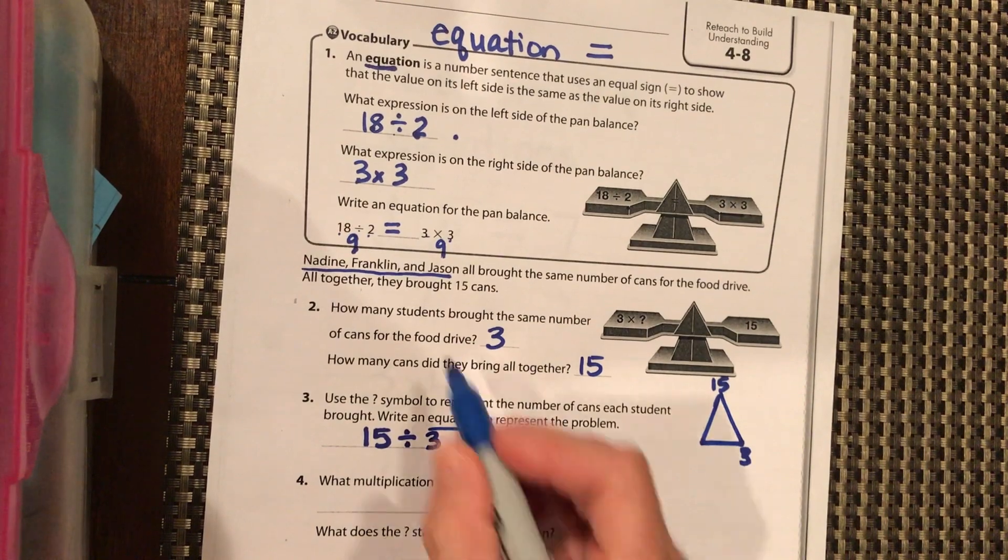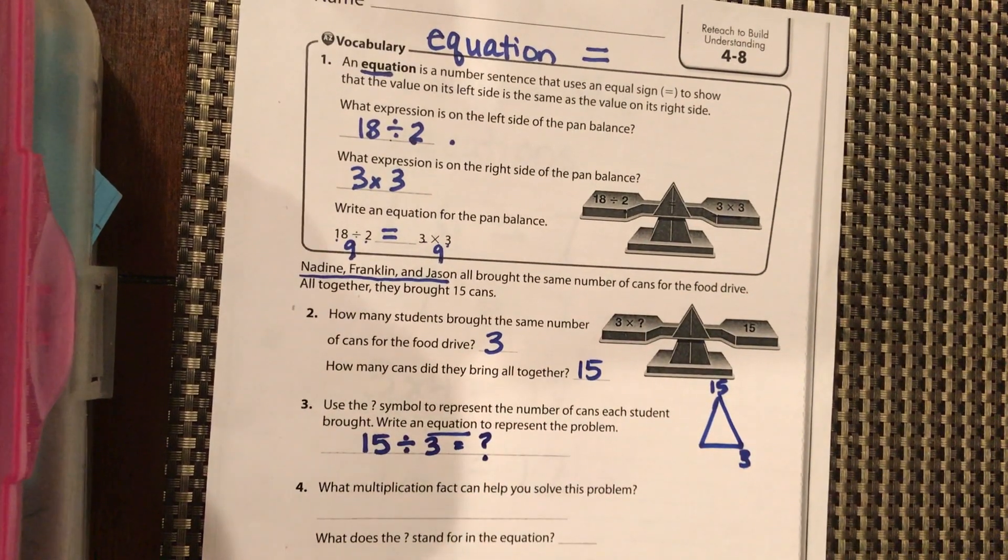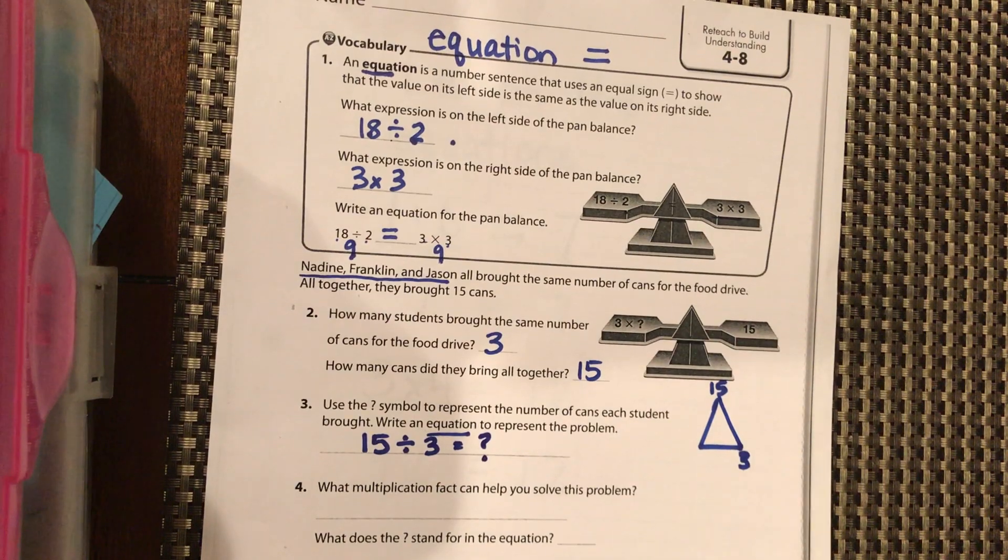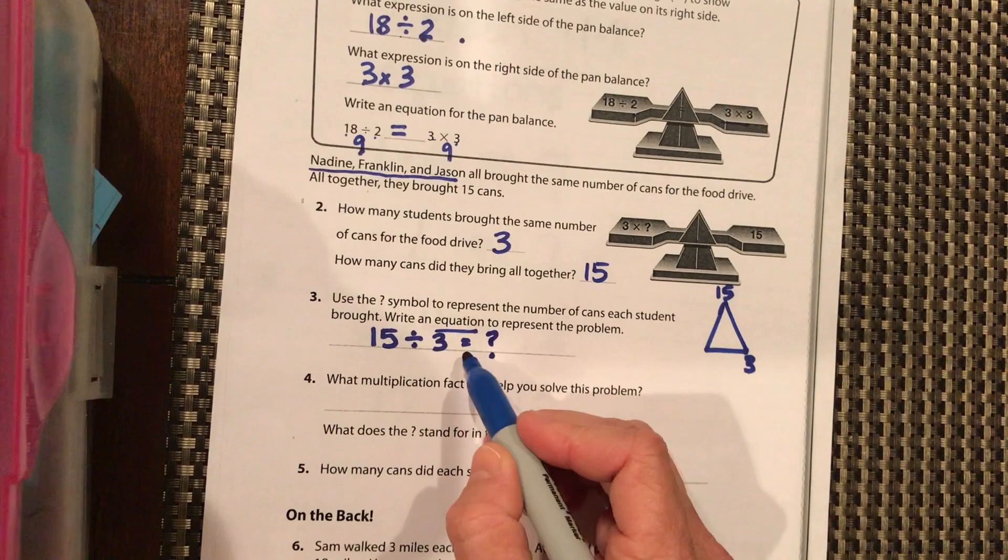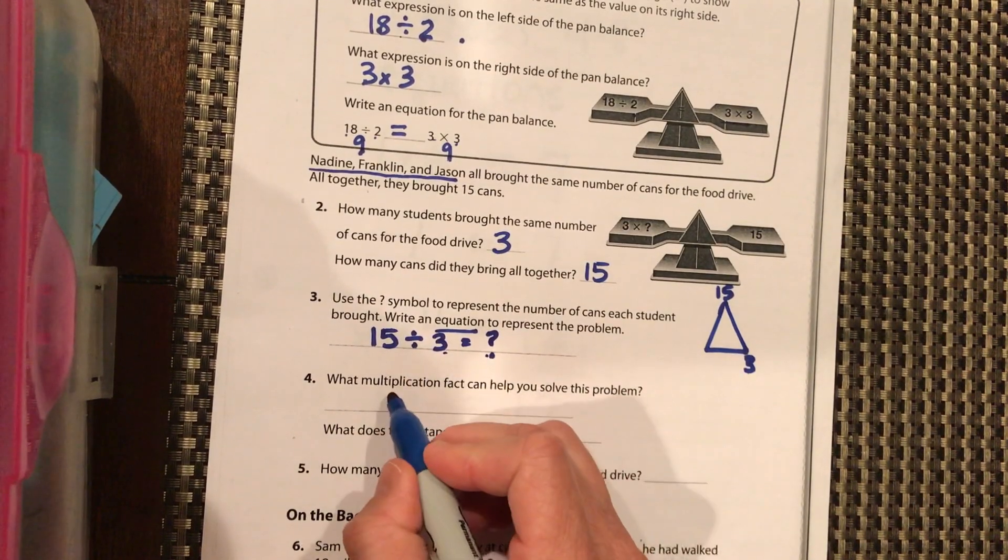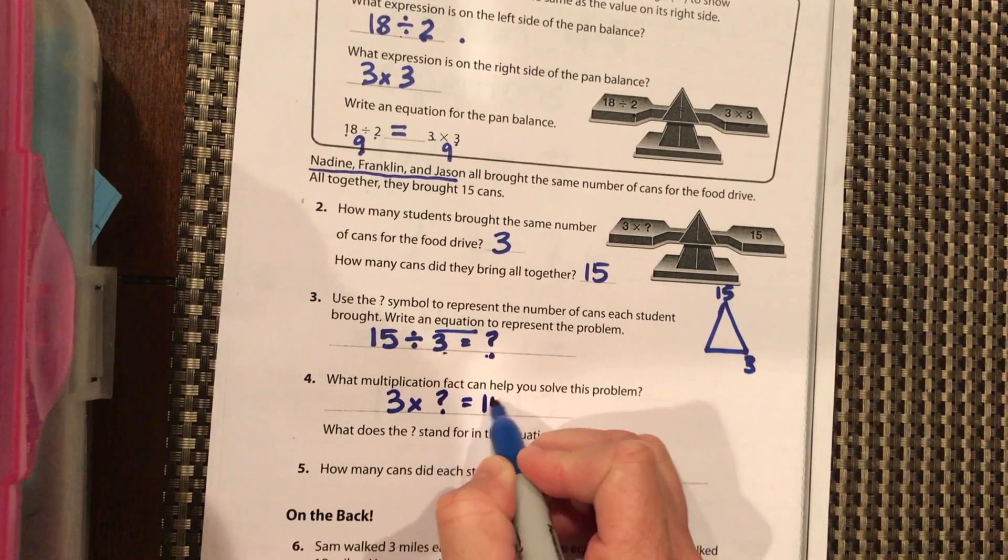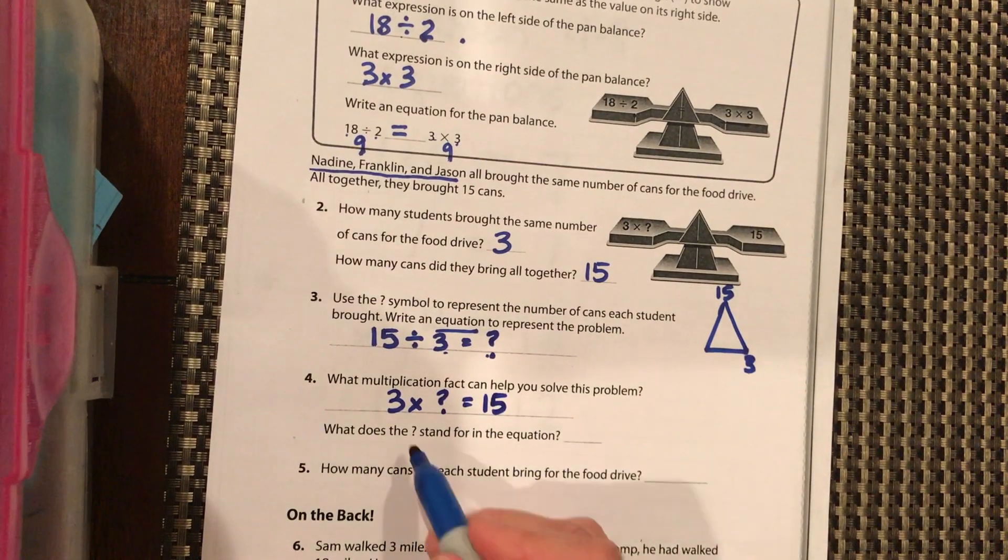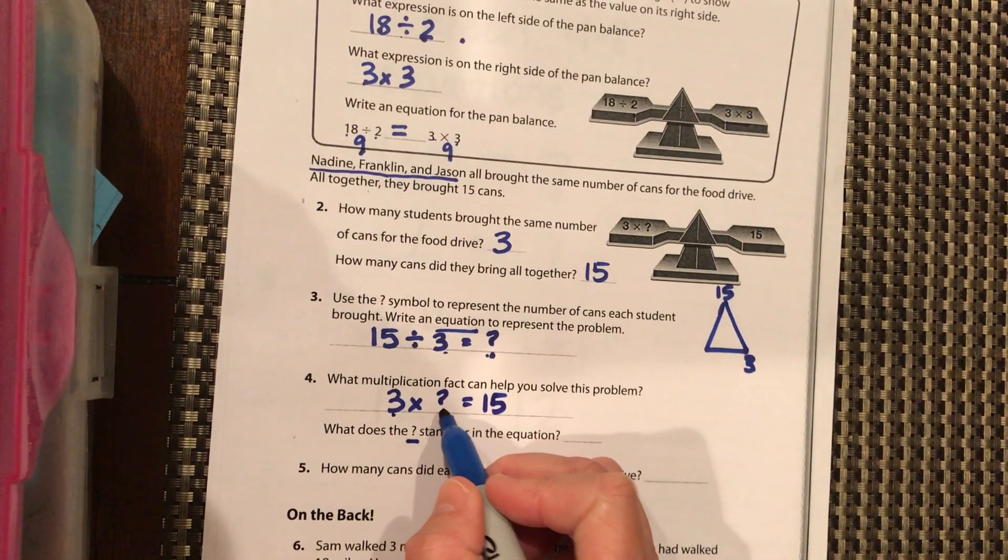Divided by the three students is going to tell us how many cans each student brought. So what multiplication problem can we have? It can be 3×? = 15. And what does the question mark stand for? What number should you put in there? That should be five. So how many cans did each student bring? Five.